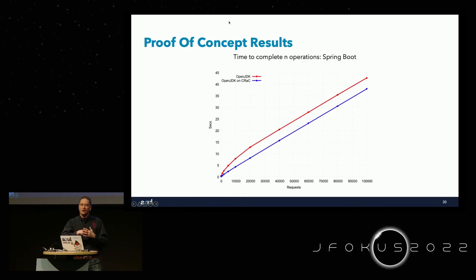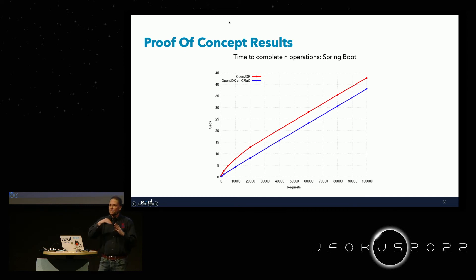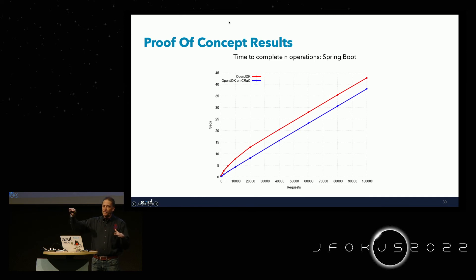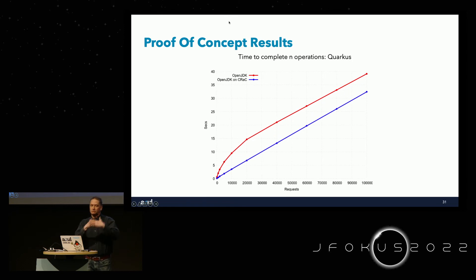Looking at throughput, a graph showing OpenJDK in red demonstrates the overhead of JIT compilation as it ramps up. Using a checkpoint, we immediately start in fully optimized code — right from the very beginning — seeing a reduction in time to complete a given number of transactions. The same pattern appears with Quarkus, with a slightly bigger differential due to the profile of that application's code compilation needs.